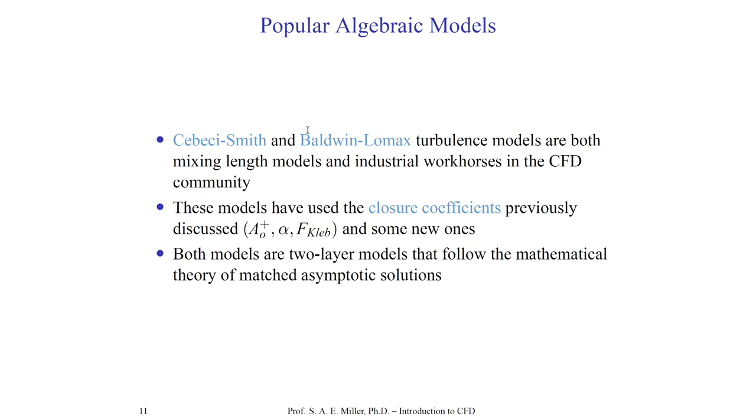Other researchers came along and tried to improve on Prandtl's hypothesis, creating their own models. There are two we're going to look at: the Cebeci-Smith model and the Baldwin-Lomax model. They're both turbulence models and both mixing length models. They represent traditional industrial workhorse models for CFD and will be found in many CFD codes.